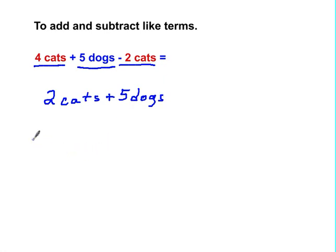If we looked at this with variables, we would say it's 4c plus 5d minus 2c. We see that these two terms are like because they have the same variable. So 4c minus 2c is 2c plus 5d, and this would be your final answer to simplify.